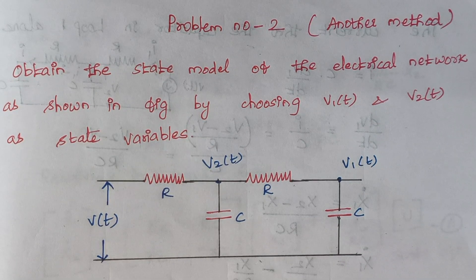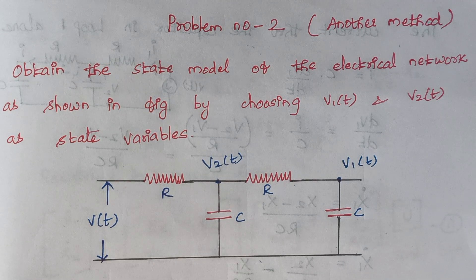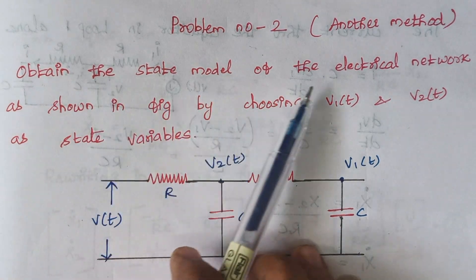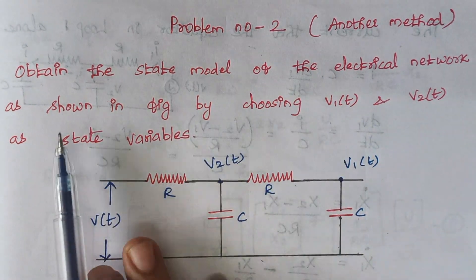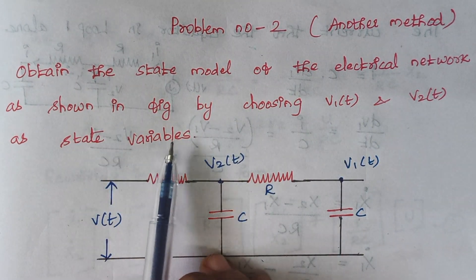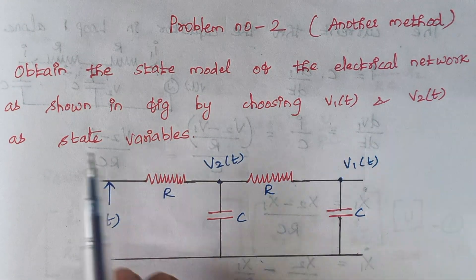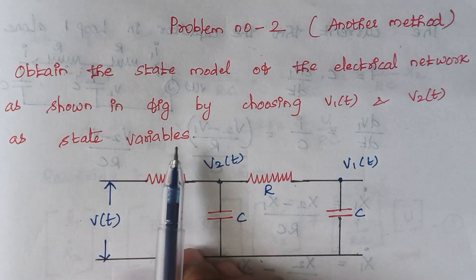Hello viewers, I am Kausalya. Today we are going to solve problem number 2 under the topic designing a state model of a circuit, and we are going to solve this problem by another method. The problem is: obtain the state model of the electrical network as shown in the figure by choosing v1(t) and v2(t) as state variables.